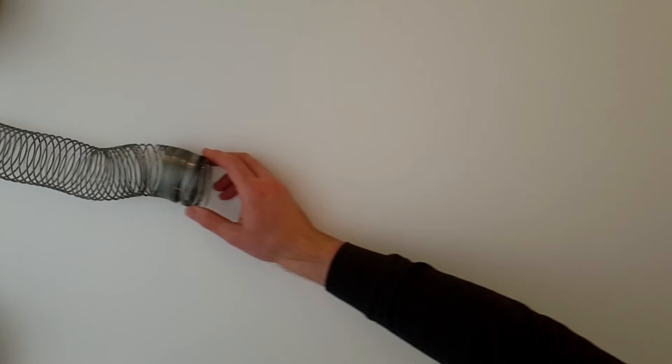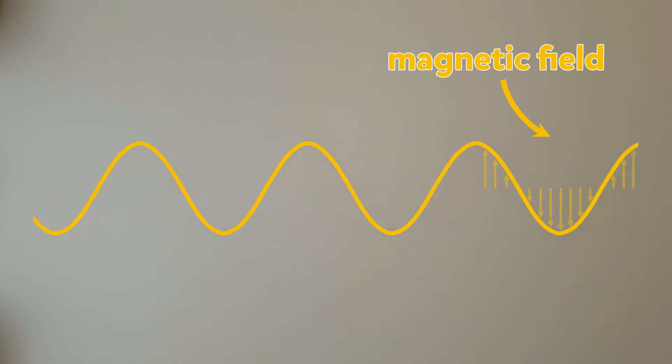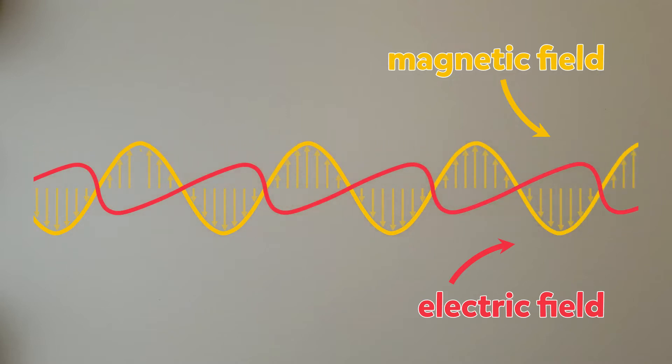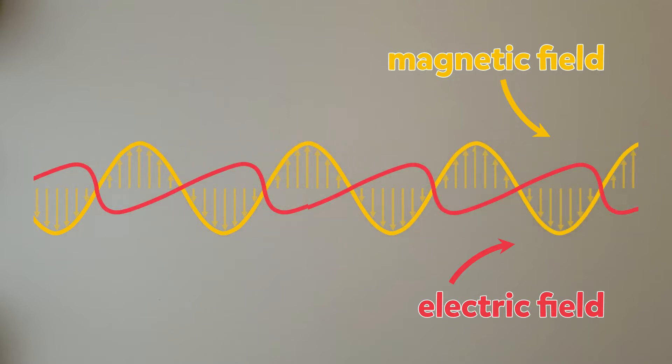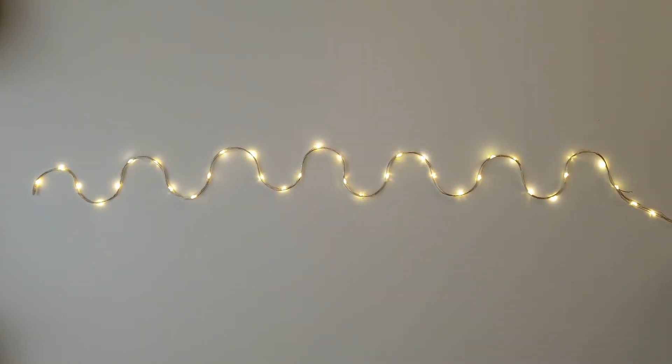Light can also be described as a wave. Instead of slinky rings moving up and down, we have a magnetic field moving up and down, as well as an electric field moving side to side at the same time. But that's getting a bit complicated, so let's just look at the magnetic field, which we'll represent with this string of fairy lights.